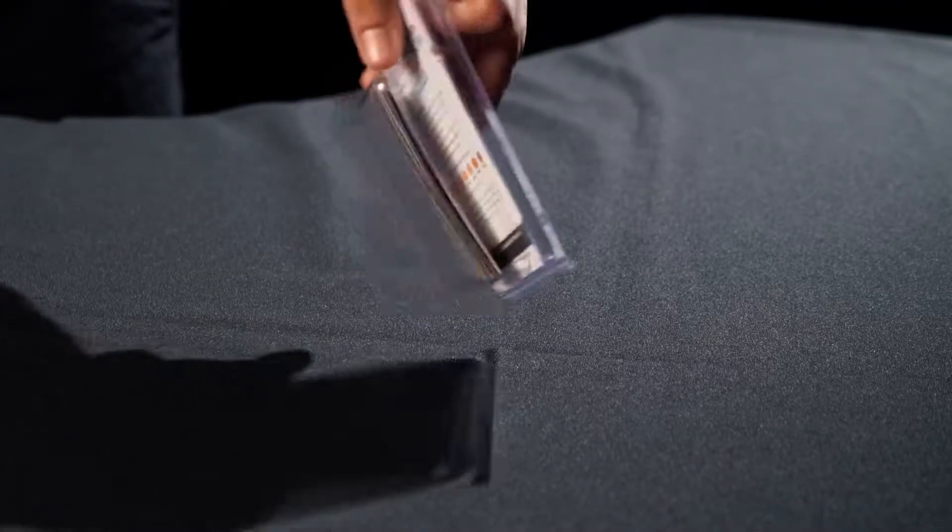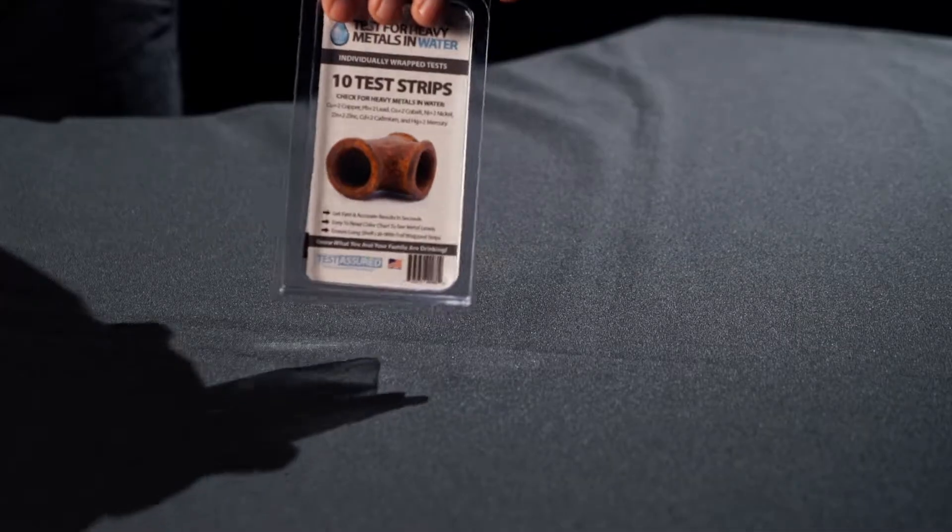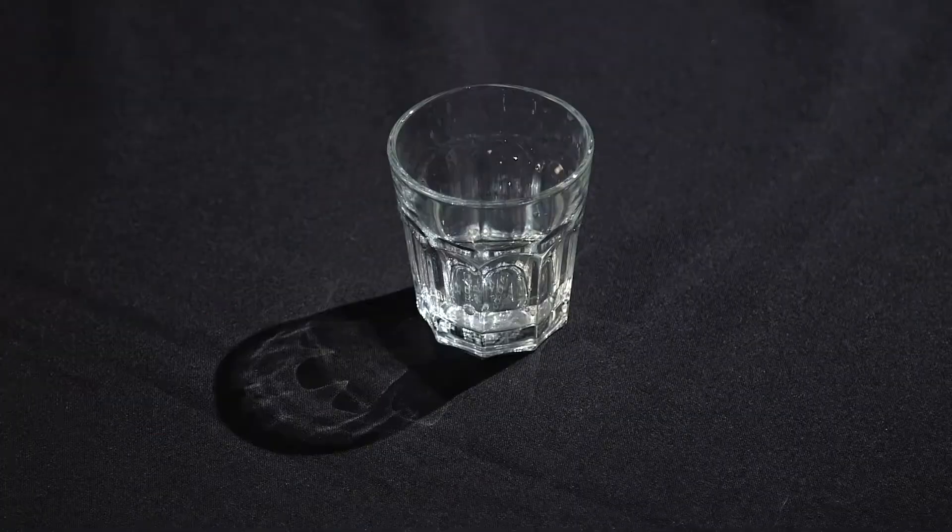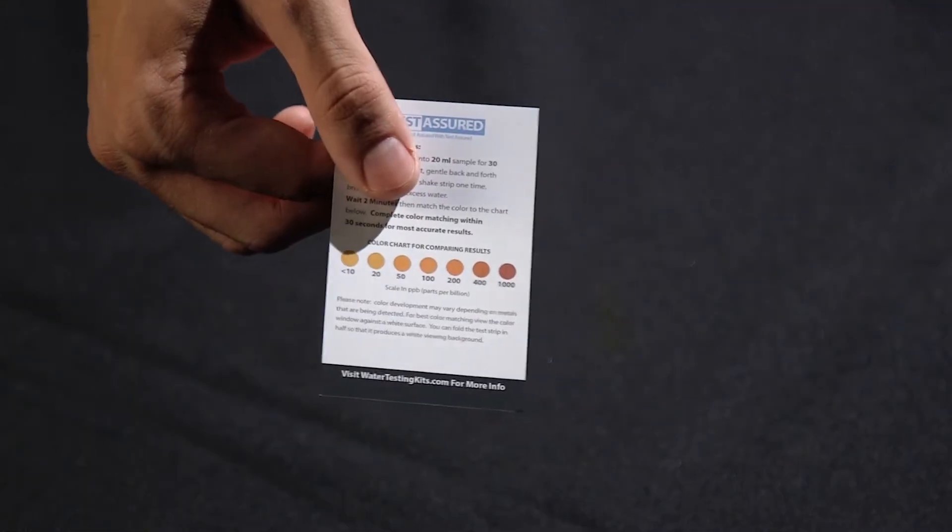For this test, we only need three items from your water test analysis kit: a heavy metals test strip, a water container, and your test color chart for comparing results.